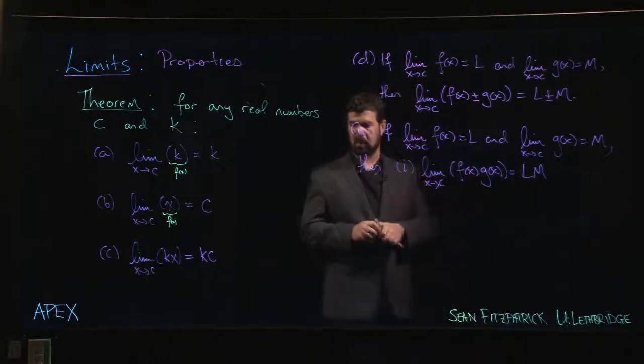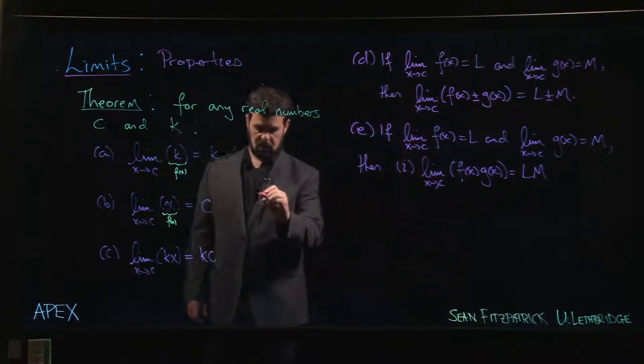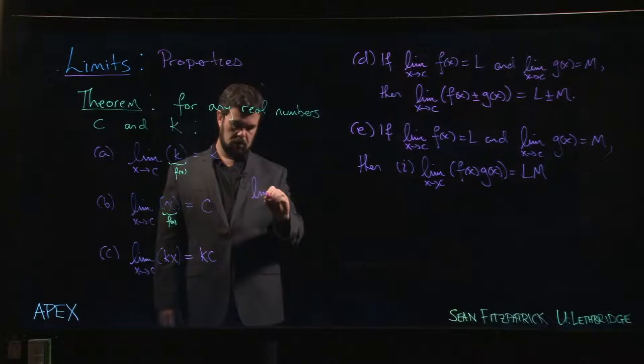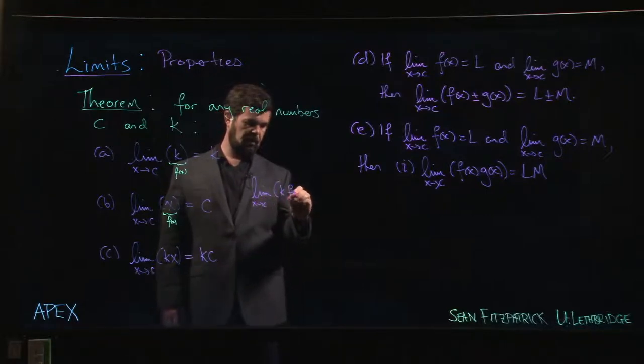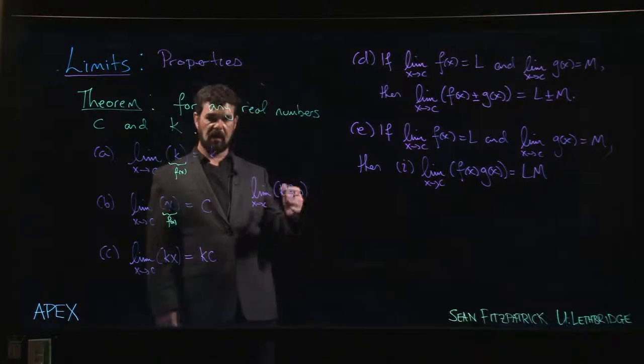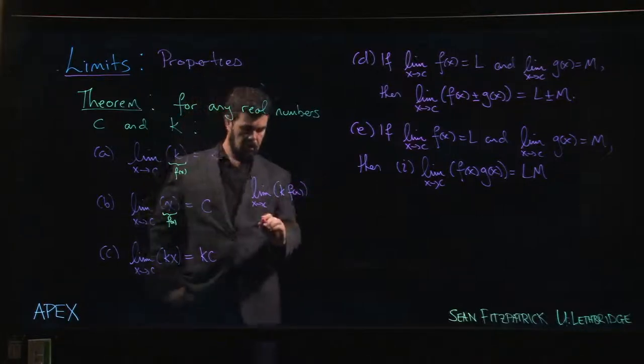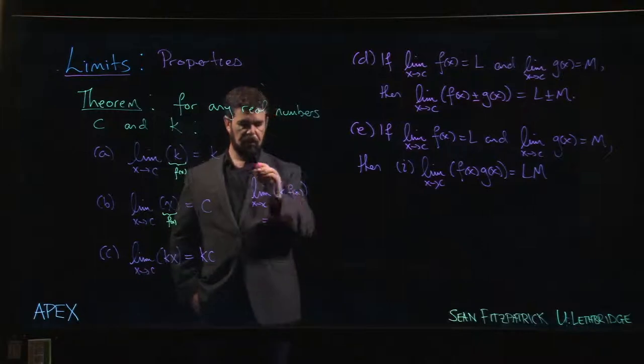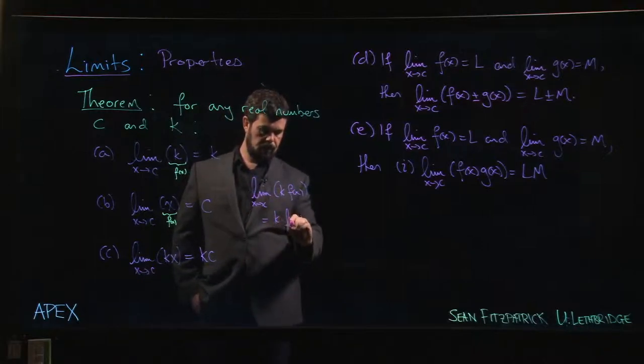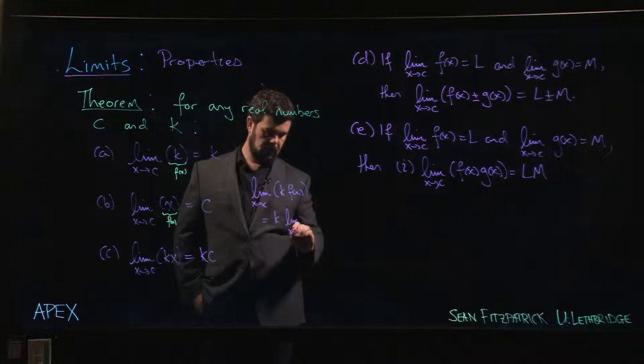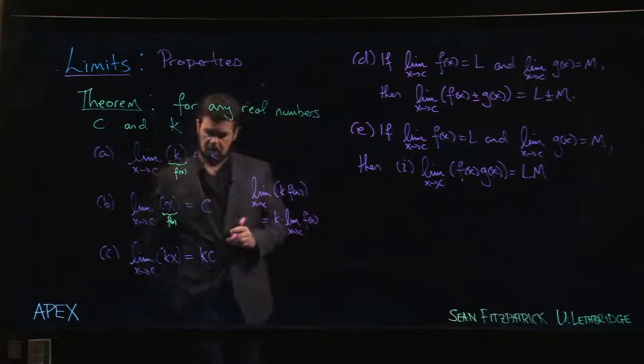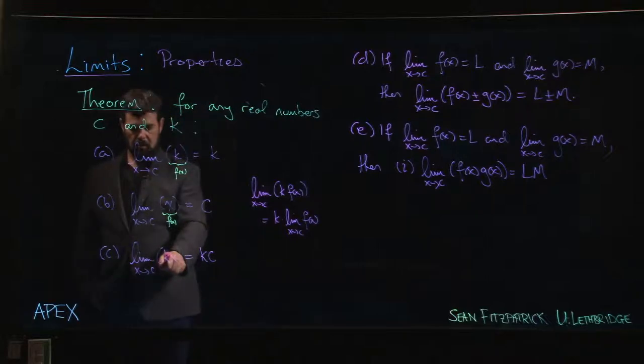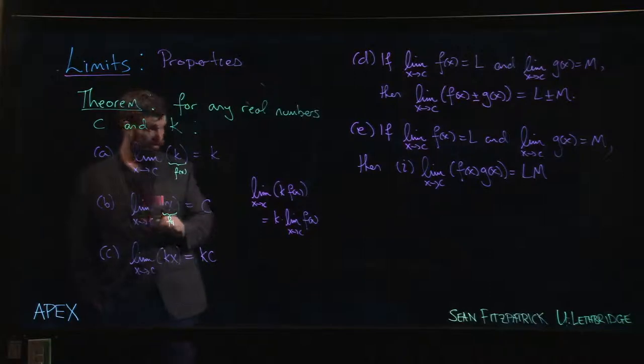And the way that a lot of people will think about this is if you had the limit of say a constant times f of x. Rather than writing in terms of this limit L, a lot of people think of it as you can pull the constant out so you could write this as k times the limit as x goes to c of f of x. Much as you could think of doing it here. If you bring the constant out front then you've just got the limit of x which was equal to c from part b.